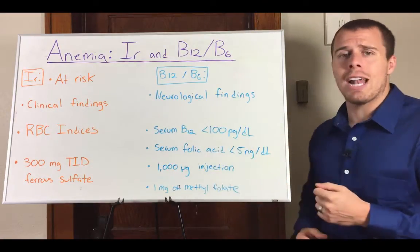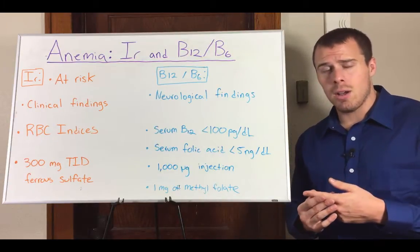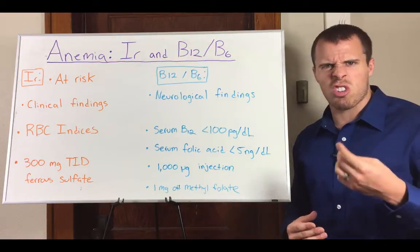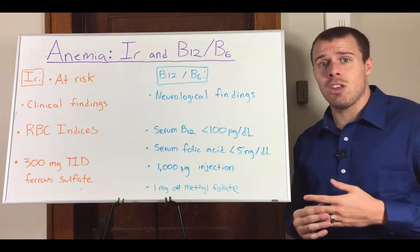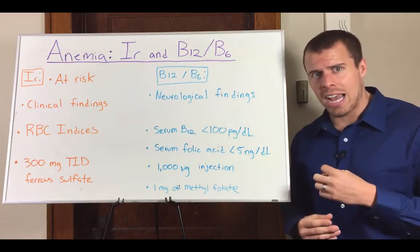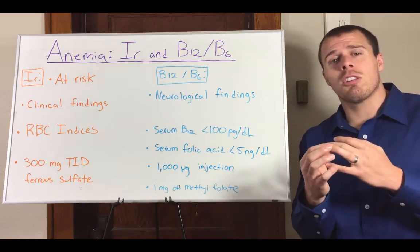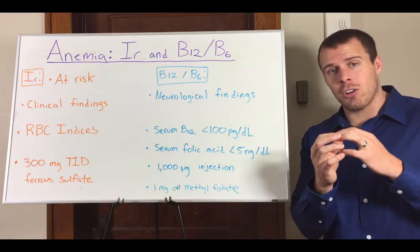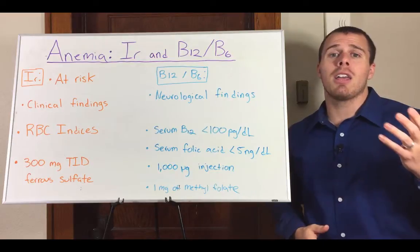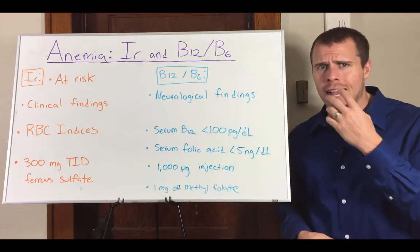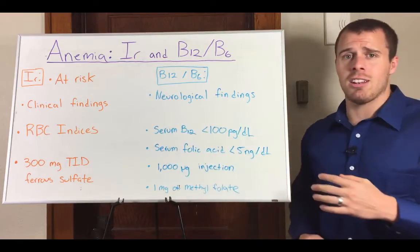Clinical findings that present with iron anemia include pica, which is the craving of dirt or other starches; pagophagia, which is craving of ice; koilonychia, which is concavities or divots in the fingernail beds; and cheilosis, which is cracking around the lips.